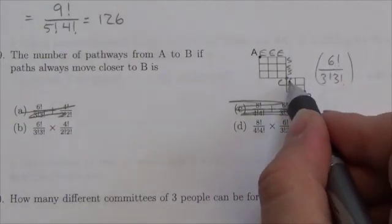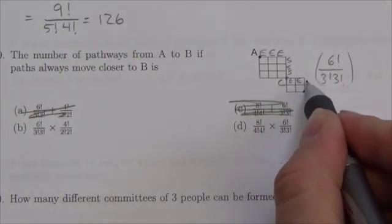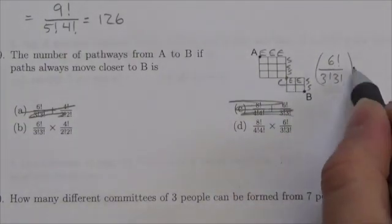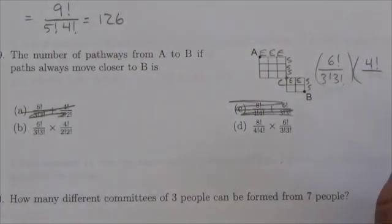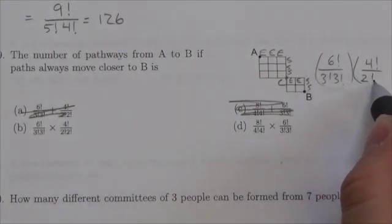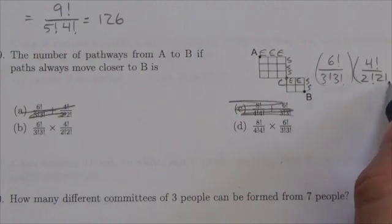To go from C to B, I would have to go east, east, and then south, south. So that's four different blocks that I've got to pass over, two of which are going east, two of which are going south.